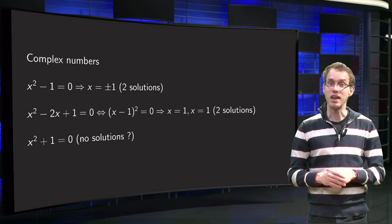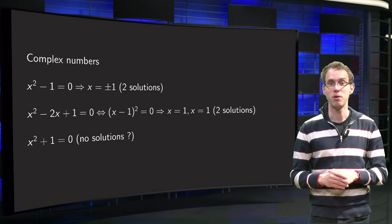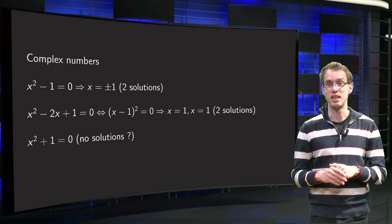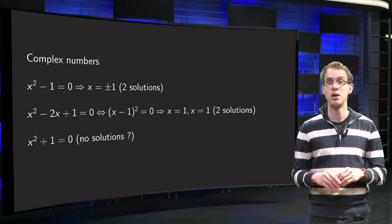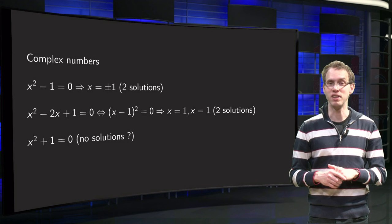If we look at the equation x squared minus 2x plus 1 equals 0, we can factorize that as (x minus 1) squared equals 0, so we see x equals 1 is a solution of that equation.